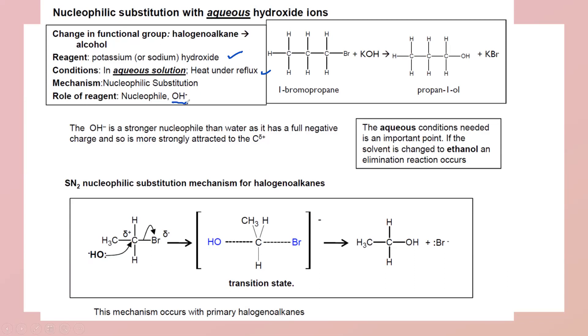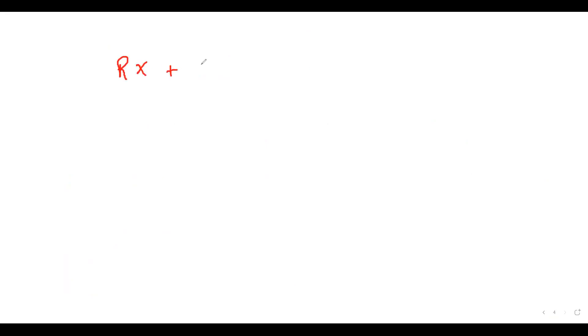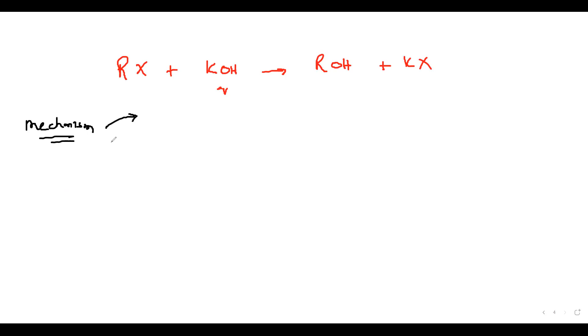The role of the reagent is to provide the nucleophile OH⁻. The overall equation: halogenoalkane RX reacts with aqueous KOH or NaOH to produce alcohol ROH and potassium or sodium halide. From an exam point of view you should be able to write the mechanism. Whether SN2 or SN1 mechanism occurs depends on whether the question gives you a primary or tertiary halogenoalkane.